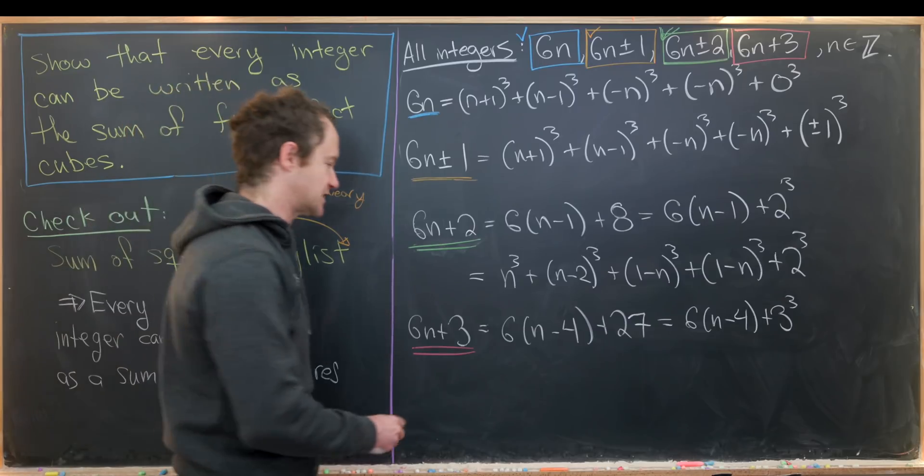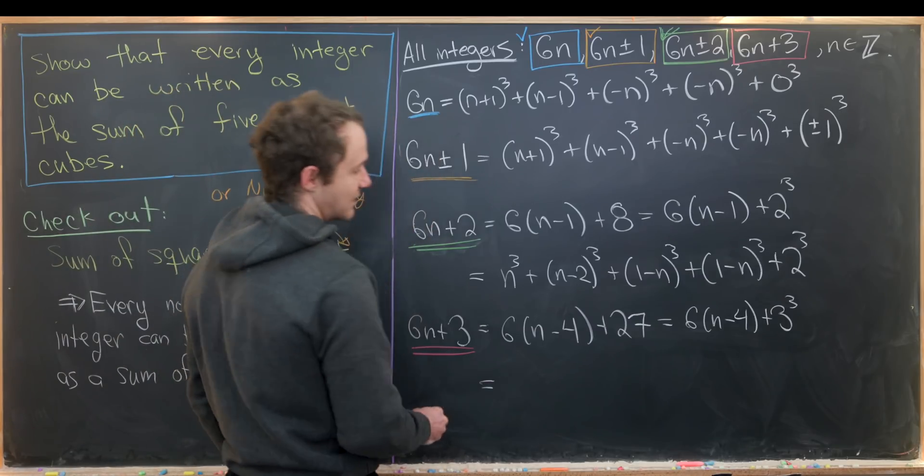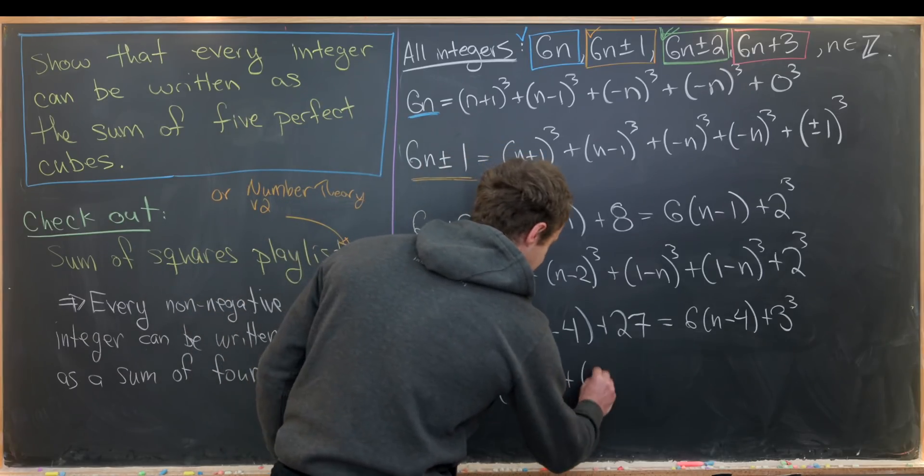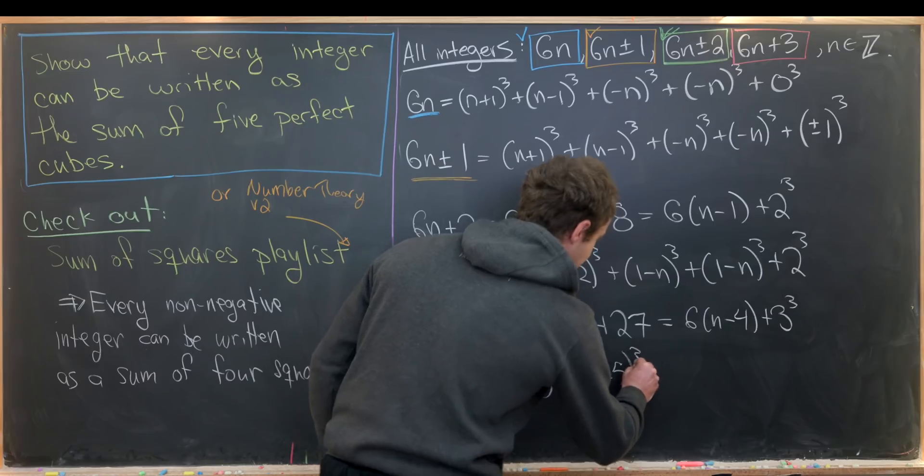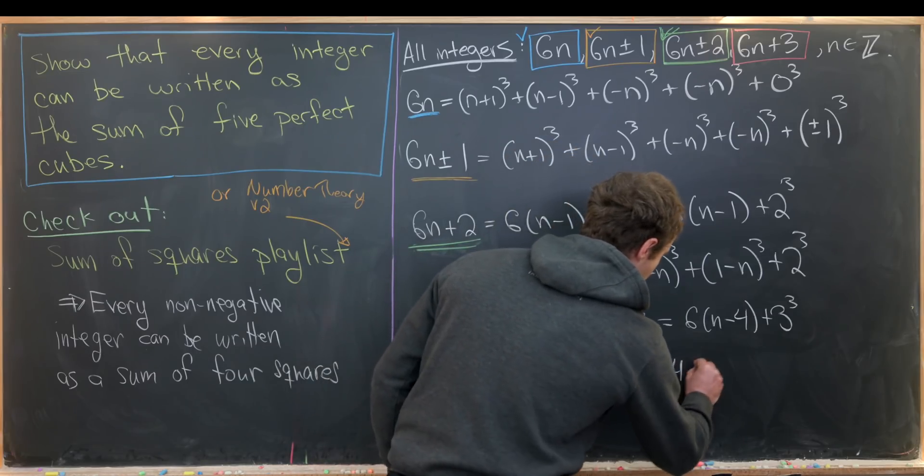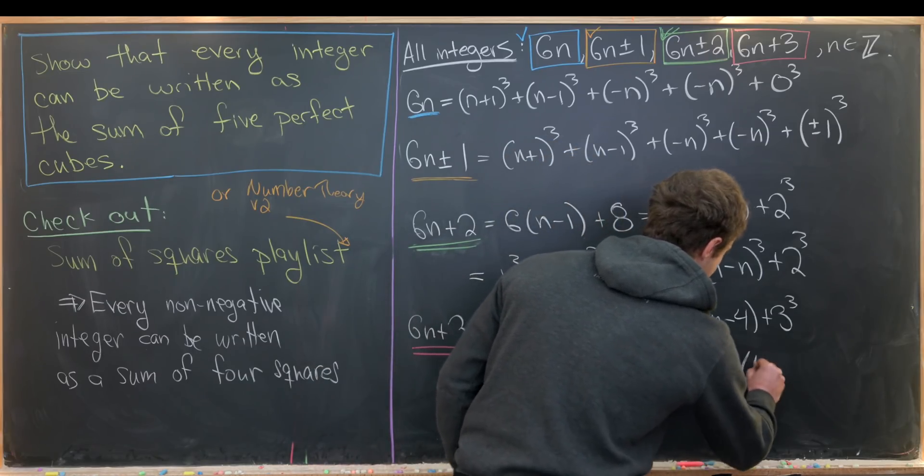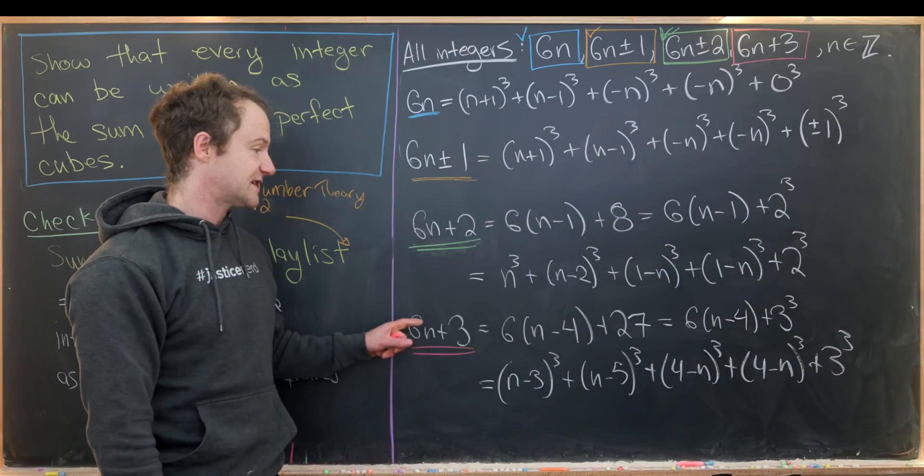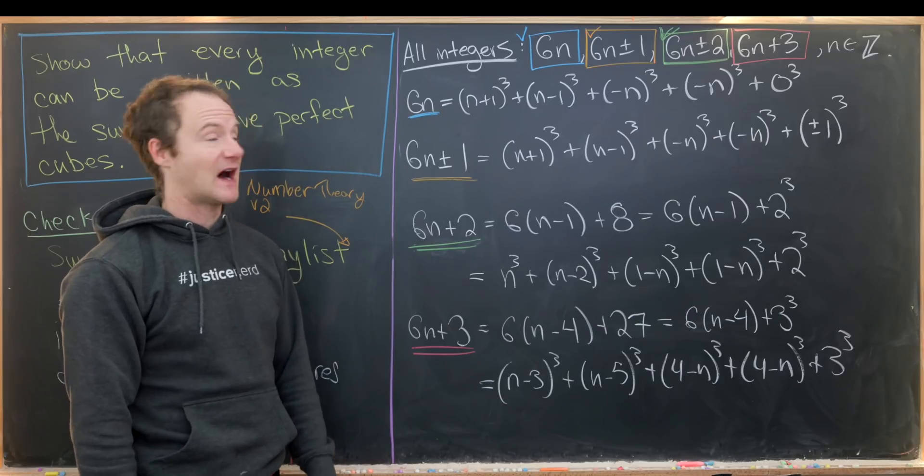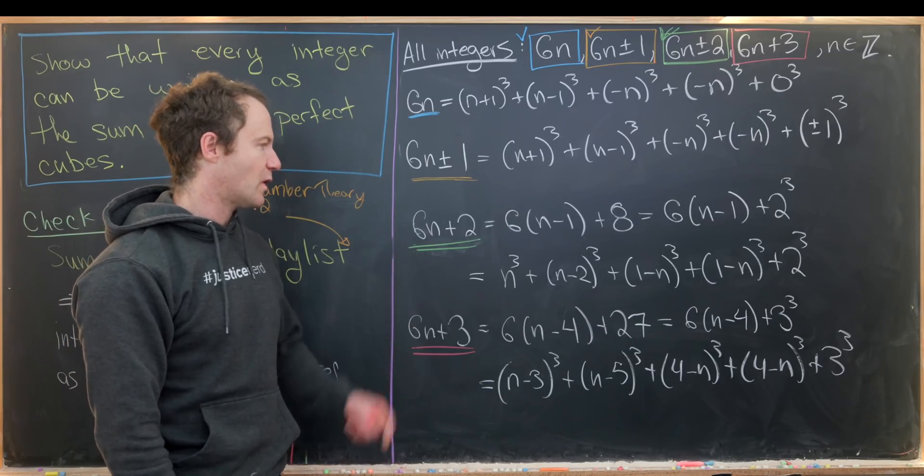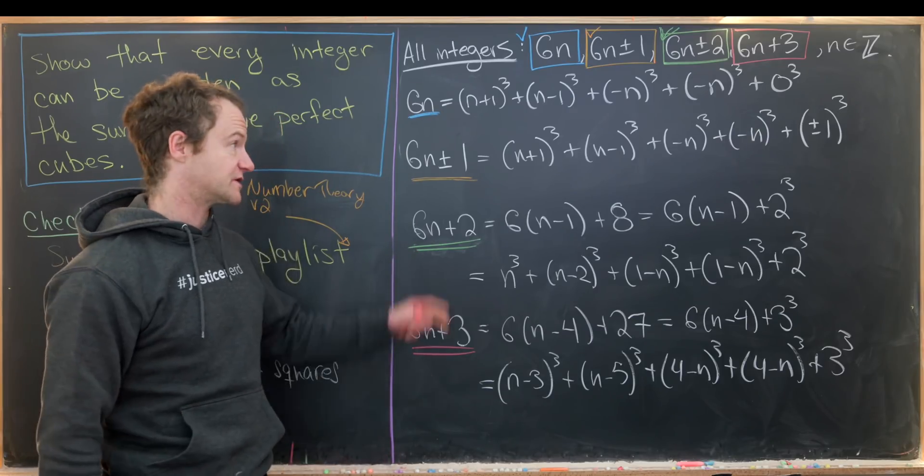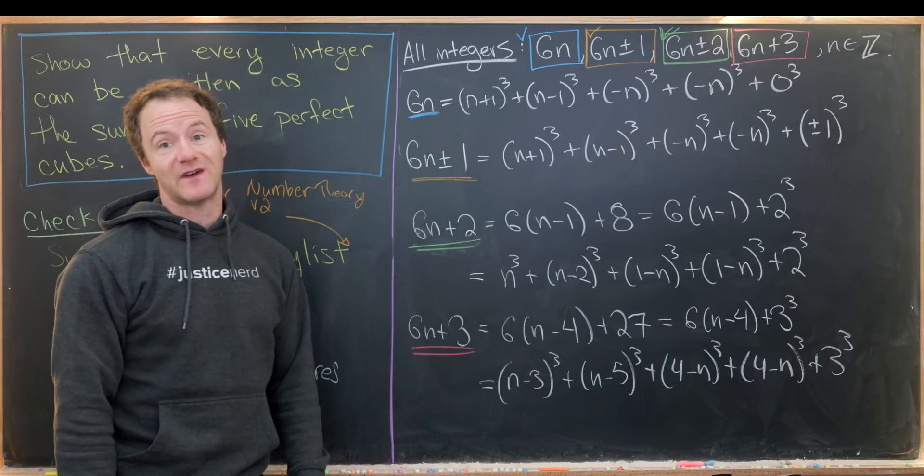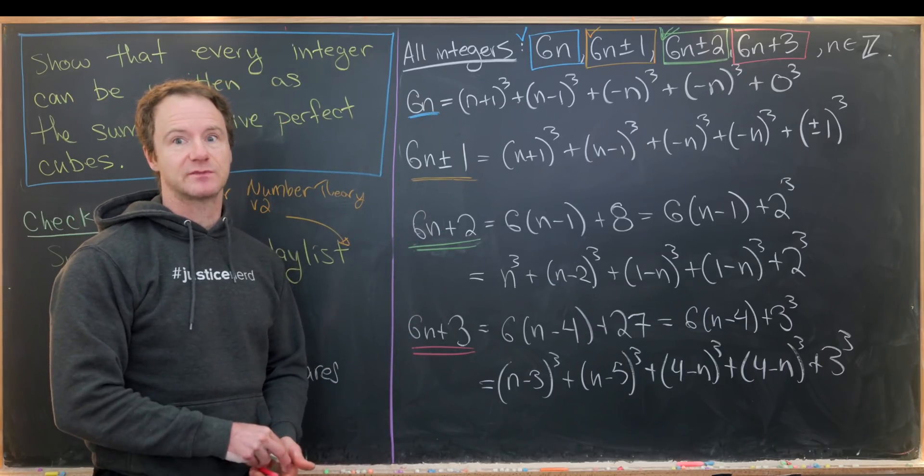Then we can expand the 6(n-4) using the 6n expansion just where the role of n is now being played by n-4. So that'll give us something like this: (n-3)³ + (n-5)³ + (4-n)³ + (4-n)³ + 3³. We've written 6n+3 as the sum of 5 perfect cubes. And apart from the one that I left as a homework exercise, that means we've written every integer as the sum of 5 perfect cubes. And that's a good place to stop.